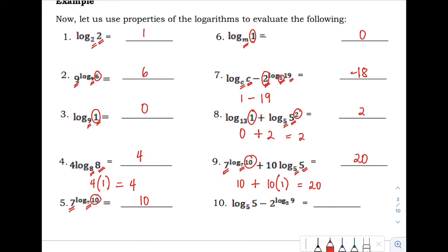Number 10: we have the logarithm of 5 with base 5, which equals positive 1. Minus 2 raised to the logarithm of 9 with base 2 — the bases match, so that equals positive 9. Then 1 minus 9 equals negative 8.